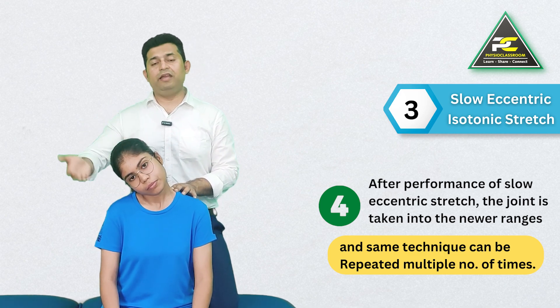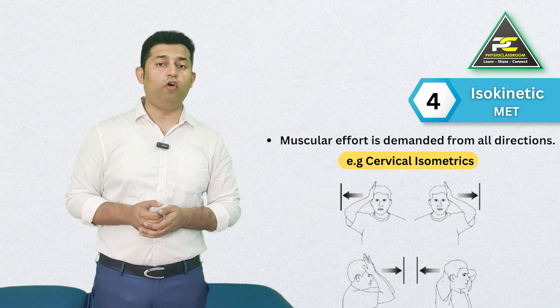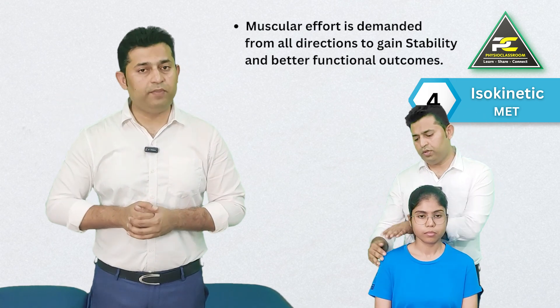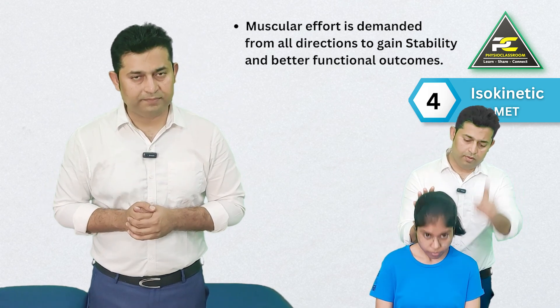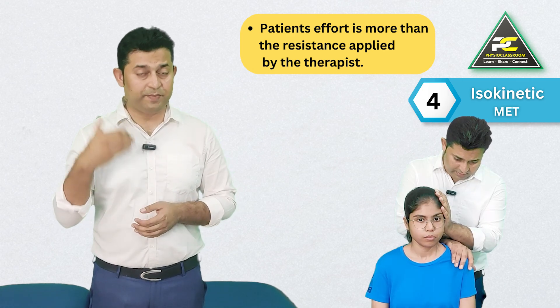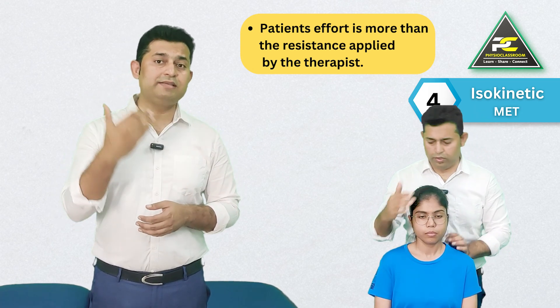The fourth and final variation of MET is known as isokinetic MET. In this form, the patient's muscular effort is demanded from all directions — for example, the head and neck muscles contract in all directions during rehabilitation post-injury — with the intention of improving tone and muscle balance for a better functional outcome. The effort applied by the patient is usually greater than the therapist's resistance, resulting in muscles working concentrically. The outcome is improved strength, endurance, and greater stability.